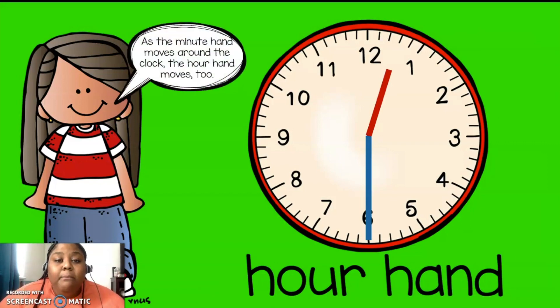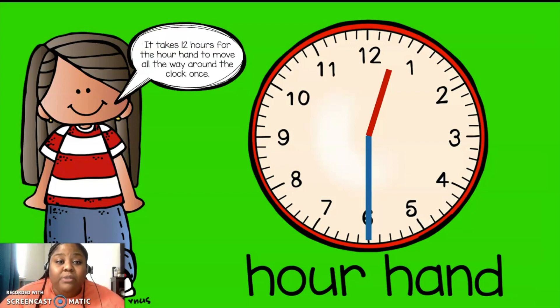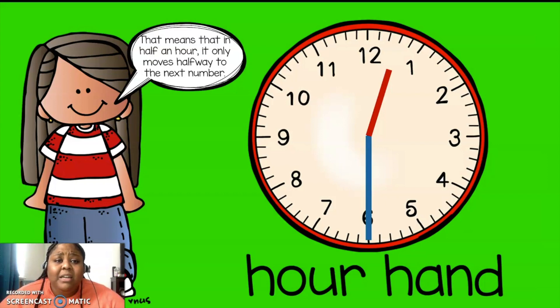As the minute hand moves around the clock, the hour hand moves too. So again, remember, the blue hand is the minute hand, and the short hand is the hour hand. It doesn't move as quickly as the minute hand though. It takes 12 hours for the hour hand to move all the way around the clock once. In one hour, the minute hand only moves from one number to the next. That means in half an hour, it only moves halfway to the next number.